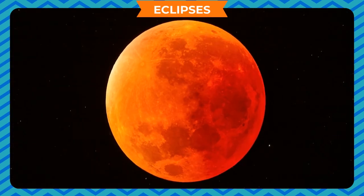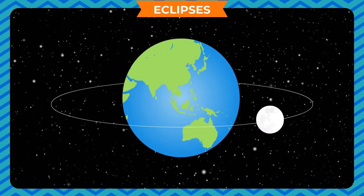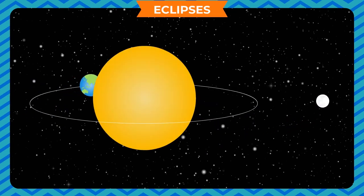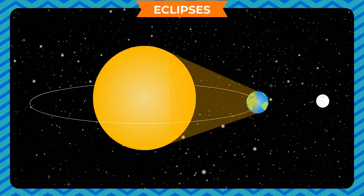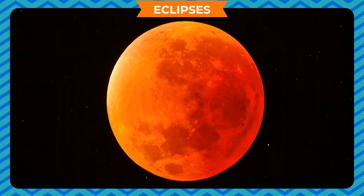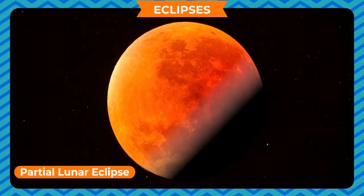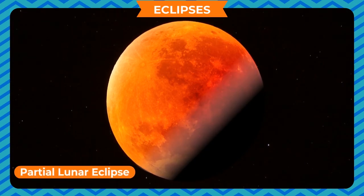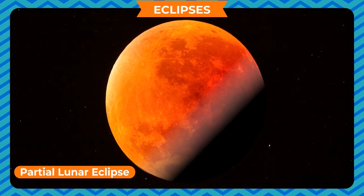During a lunar eclipse, the moon revolves around the earth and the earth revolves around the sun. Once in a while, the earth lines up directly between the sun and the moon. When this happens, the earth blocks the sunlight to the moon and the earth's shadow falls on the moon. When the earth completely blocks the sunlight, the moon looks red or orange.